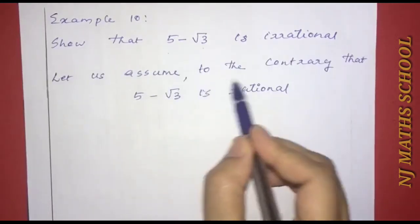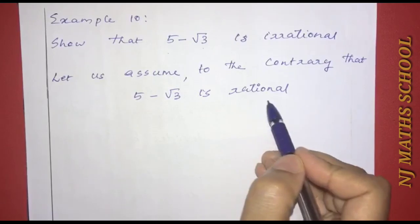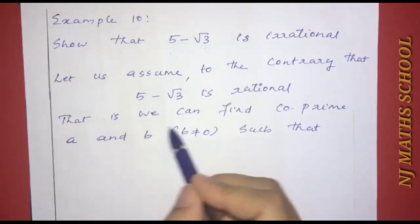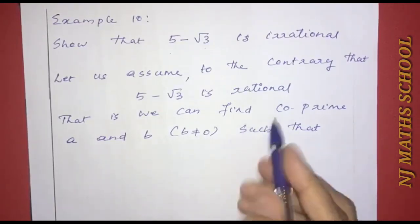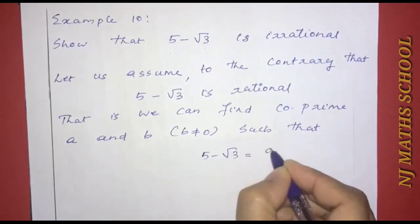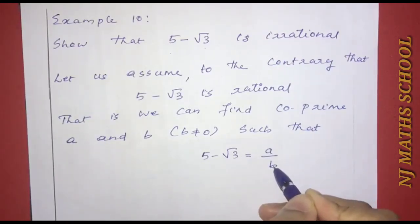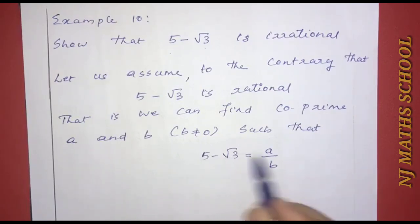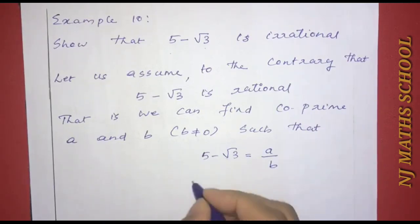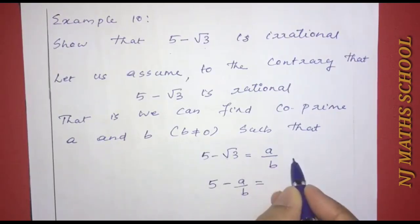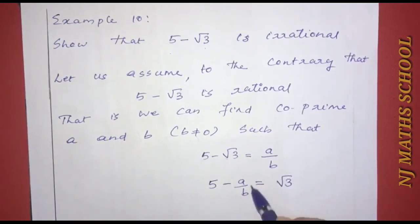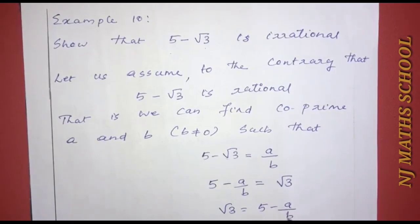Next, let us assume to the contrary that 5 minus root 3 is rational. Then we can find co-prime integers a and b, where b is not equal to zero, such that 5 minus root 3 equals a by b. Rearranging, minus root 3 equals a by b minus 5, which means root 3 equals 5 minus a by b.